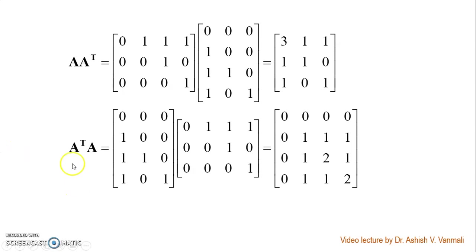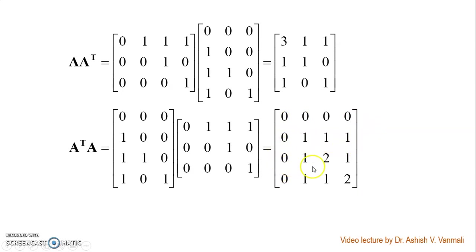For A transpose A, when you substitute and compute, you get a 4×4 matrix where the first row is all zeros, second row is [0,1,1,1], third row is [0,1,2,1], and the last row is [0,1,1,2]. So A transpose A is a 4×4 matrix, giving 4 eigenvalues and 4 corresponding eigenvectors.